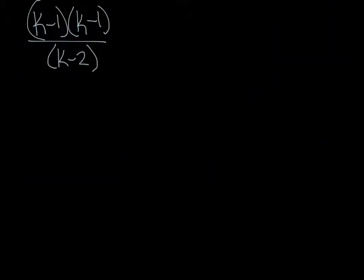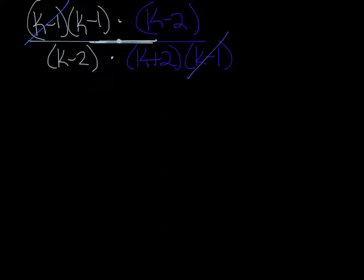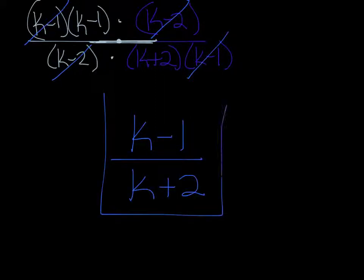Now I've simplified the top and the bottom, so I flip and multiply. The numerator was (k minus 1)(k minus 1) over (k minus 2). We're dividing by the denominator, so we flip it: (k minus 2) goes on top, and (k plus 2)(k minus 1) goes on the bottom. When we multiply across, we can cancel: k minus 1 appears in both the top and bottom — those cancel. And k minus 2 appears in both — those cancel too. So all I have left on top is k minus 1, and on the bottom is k plus 2. That is as simplified as it's going to get.